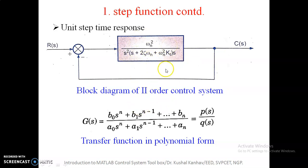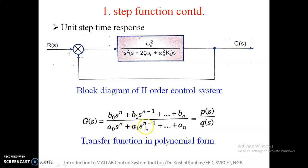Any transfer function can be represented in polynomial form. If G(S) is the transfer function of any system, then it can be represented as P(S) / Q(S), where P(S) and Q(S) are polynomial functions. In the numerator: B0·s^n + B1·s^(n-1) + ... + Bn. Similarly, for the denominator: A0·s^n + A1·s^(n-1) + ... + An. Any transfer function can be represented in this manner, and on this basis we are going to write MATLAB programs for different functions.